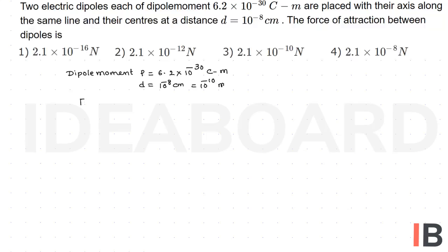Now the force between the two dipoles, we know the expression: this is 1 by 4π epsilon 0 into 6P squared by d to the power 4.